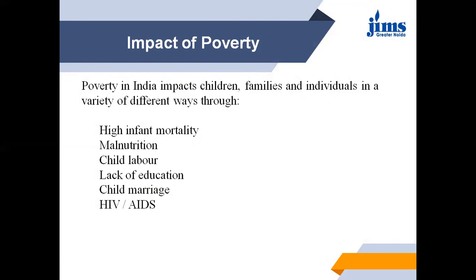Child marriage is also an impact of poverty. In spite of banning minors from marrying in 2006, it is still widespread in many regions of India. Young girls who are still children themselves become mothers too early, and many die at birth. According to an investigation by the medical journal the Lancet, 44.5% of girls are still married in India before they are of legal age. Due to poverty, many parents encourage early marriages for their daughters hoping for a better life for them.